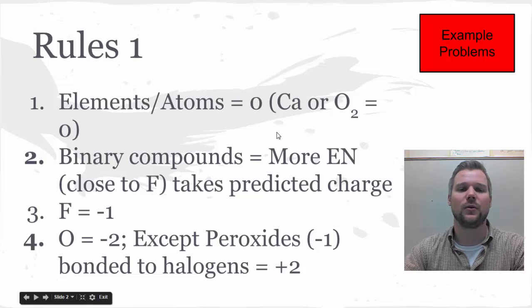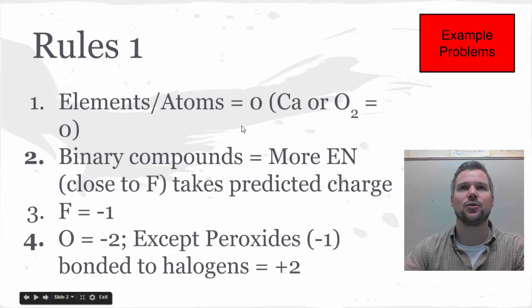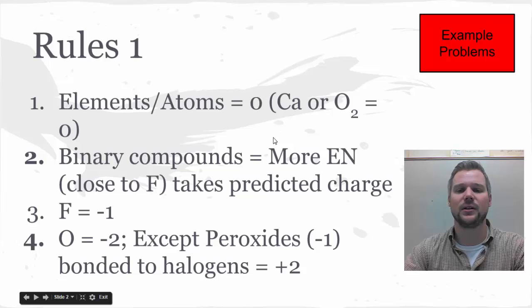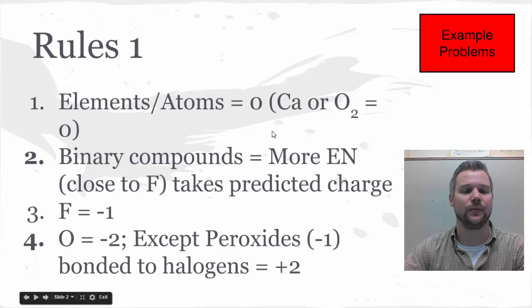Rule number two: for binary compounds—covalent or molecular compounds—the more electronegative takes the predicted charge. If I have carbon and oxygen together, oxygen is in group six and closer to fluorine, while carbon is in group four and further from fluorine, so oxygen is more electronegative. It takes its predicted charge of -2.